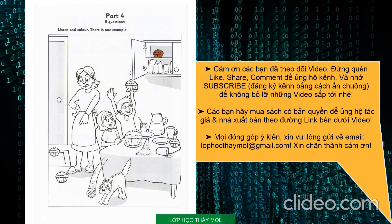Now, listen to part 4 again. 1. Can you see the boy? Yes. He's got a cake in his hand. Yes. Well, colour that cake pink. I'm doing that now. That's very nice.